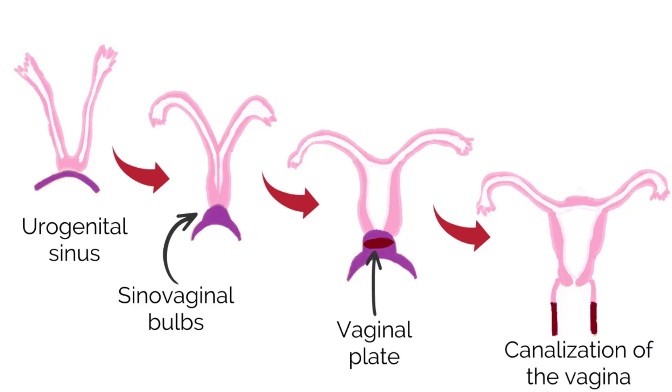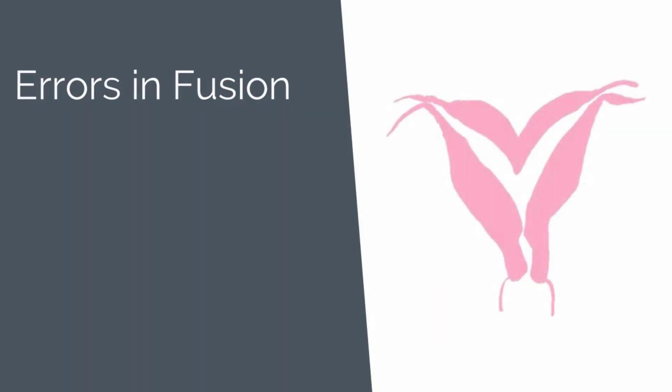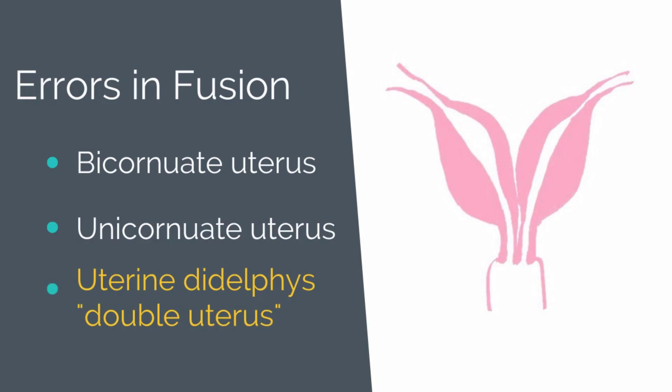With our patient, the bicornuate uterus resulted from one of three main types of error. The first is an error in fusion. With the bicornuate uterus, there is a partial fusion of the ducts, creating an indent in the fundus. With the unicornuate uterus, there is an asymmetric lateral fusion defect; one cavity is usually normal while the other duct is poorly developed. Uterine didelphys, or double uterus, is when two Müllerian ducts fail to fuse, causing duplication of the reproductive structures.